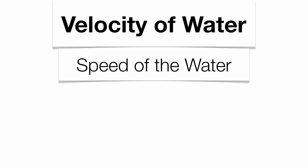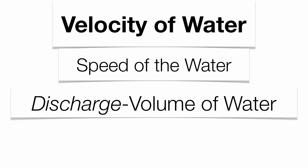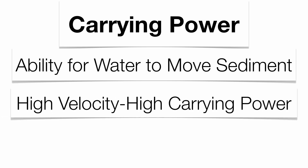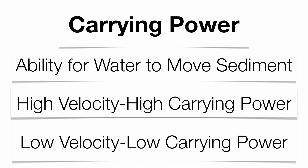Velocity has a lot to do with which particles get picked up — velocity just means the speed of the water. Discharge is the volume of water, so the more volume you have, the faster the water. Slope is the steepness of the hill; the steeper the slope, the faster the water as well. Carrying power has to do with the ability of water to move a particle of sediment. The faster the water, or the higher the velocity, the greater the carrying power and the bigger the particle that can be moved. The lower the velocity, the lower the carrying power, and the smaller the particle that's going to be moved.